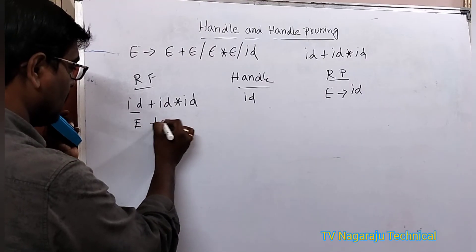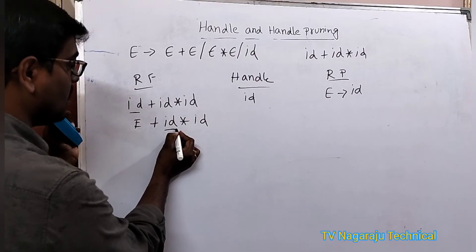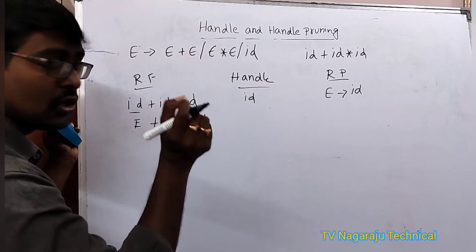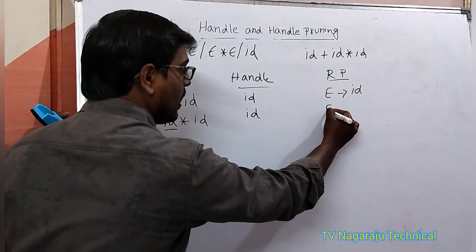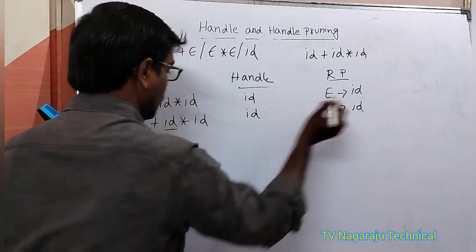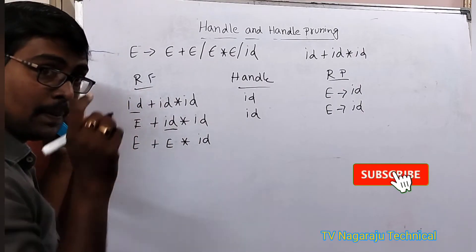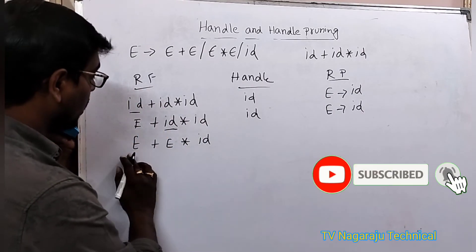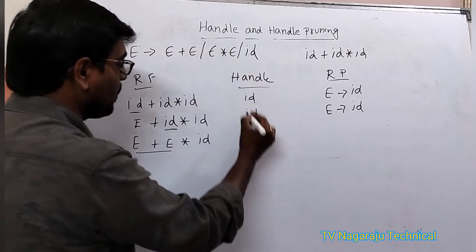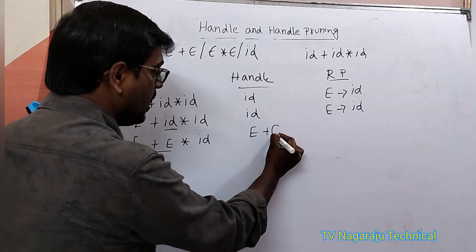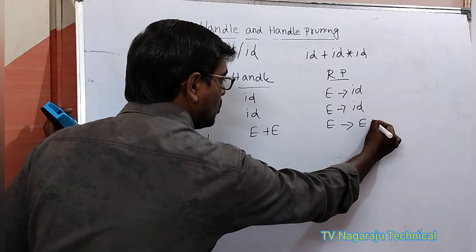After replacing ID with E, it is converted to E plus ID into ID. Again ID matches — the handle is ID and the replacing production is E tends to ID. Now the form is E plus E into ID. Again ID is the handle, replaced with E. Now we have E plus E into E. Check: does E plus E appear as a right-hand side? Yes — E plus E is the handle, replaced using E tends to E plus E.